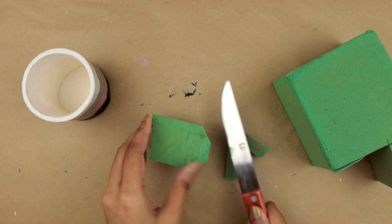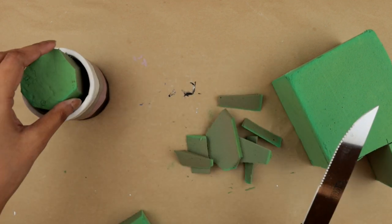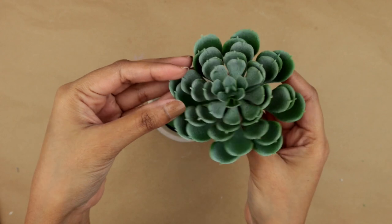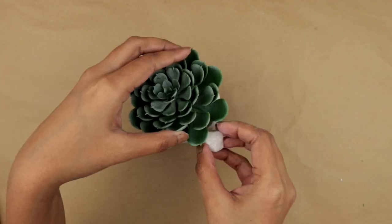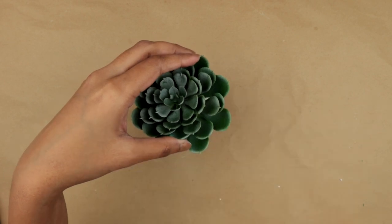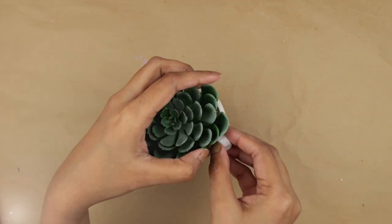Next, I'm cutting some floral foam to the size of the planter. Then I'm taking this faux succulent and pushing it into the foam. And for the final touches, I'm placing some decorative stones around the base of the succulent.